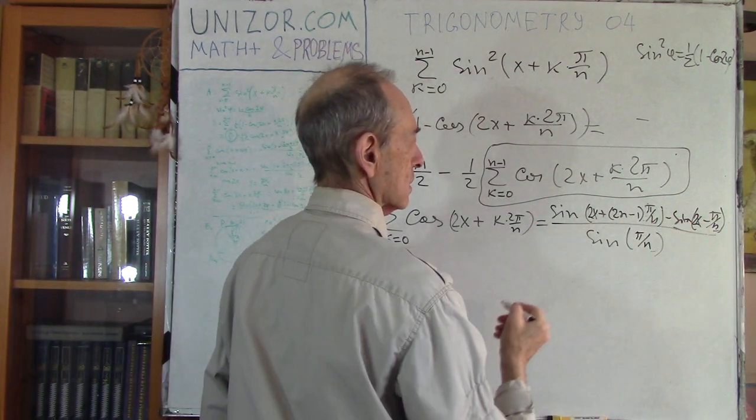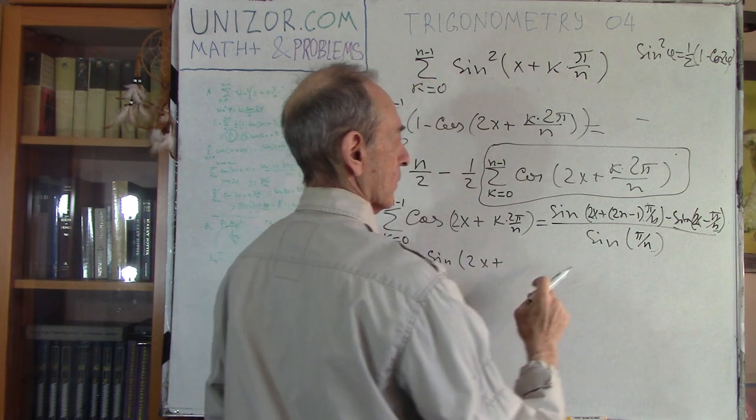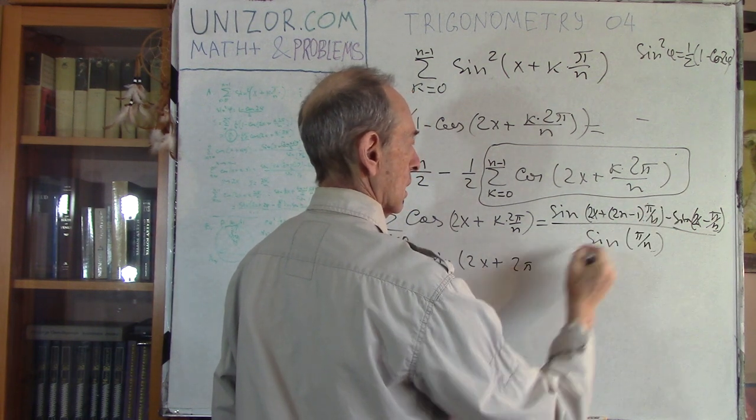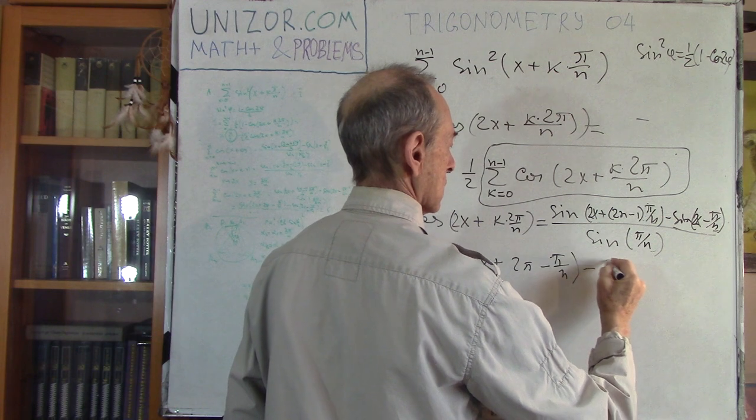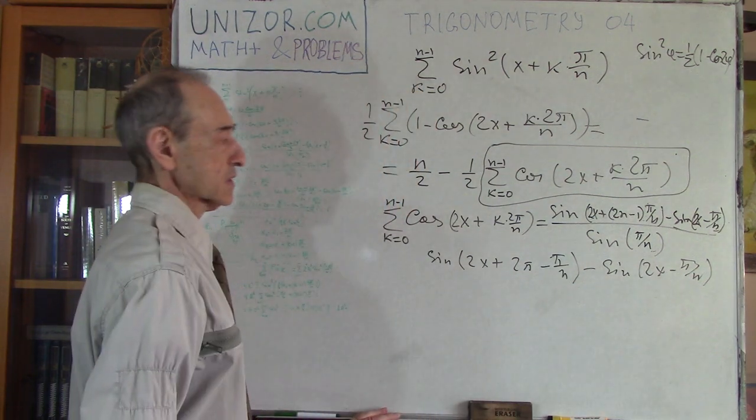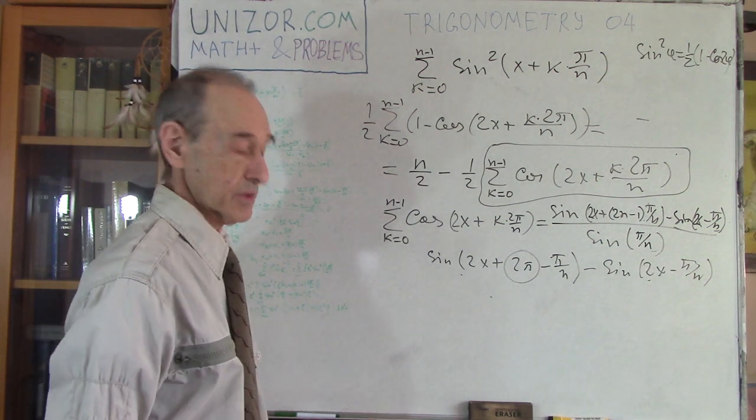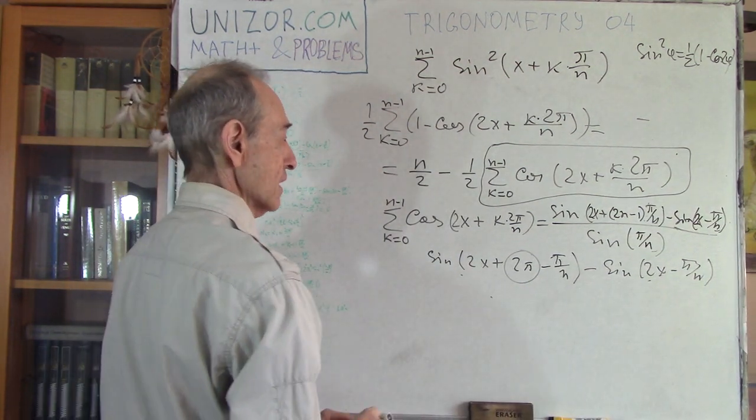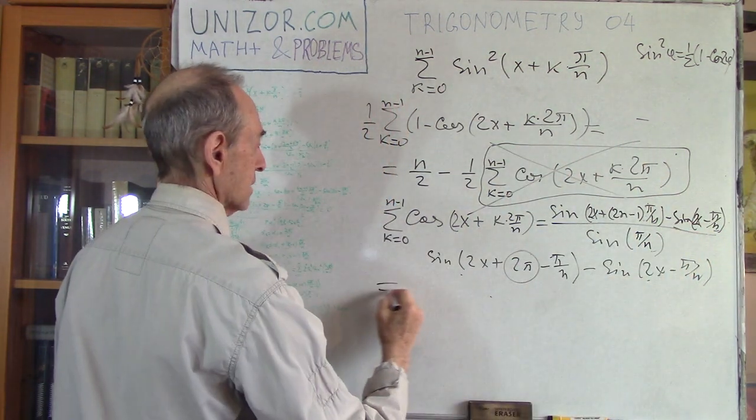All right, so let's check what's in the numerator of this. It would be sine of 2x plus 2n times pi divided by n would be 2 pi minus pi over n. Minus sine of 2x minus pi over n. Wow! That's what's interesting. What's the difference between them? This is the difference. But sine is a periodic function. And 2 pi is a period. Which means that the value of this is exactly the same as the value of this. And the whole thing actually becomes zero.